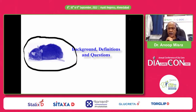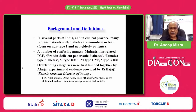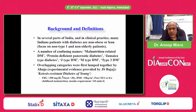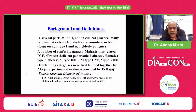A little bit of background, definition and questions. In several parts of India and in clinical practice, many Indian patients with diabetes are non-obese or lean. We are going to focus on non-type 1 and non-elderly patients here. A number of confusing names have been introduced: malnutrition-related diabetes, protein-deficient pancreatic diabetes, Jamaica-type diabetes, J-type diabetes, M-type DM, type 3 DM. Overlapping categories were first lumped together by MMS Ahuja, and experimental evidence was provided by G.S. Bajaj. The name given at that time, around four decades back, was ketosis-resistant diabetes of the young. These patients had a very high fasting blood glucose, onset of diabetes less than 30 years, very low BMI, belonged to poor socioeconomic strata, had childhood malnutrition, and very high insulin requirement.